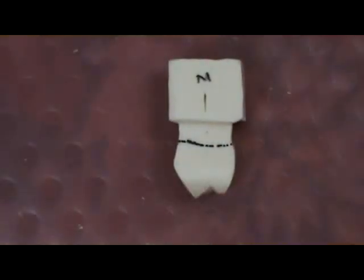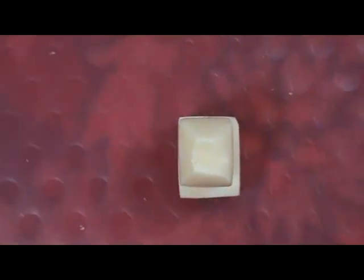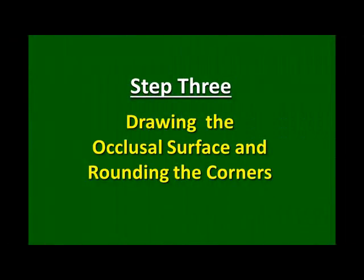This is after cutting both labial and mesial distal surface, as you can see its square shape. Step 3. Drawing the occlusal surface and rounding the corners.